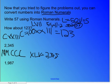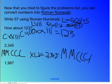And the final Roman numerals are M, M, C, C, C, C, X, L, V. Yay! And then 1, 8, 1, 9, 8, 7 equals M.